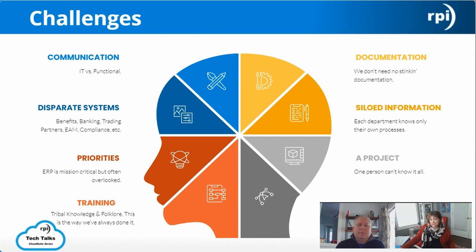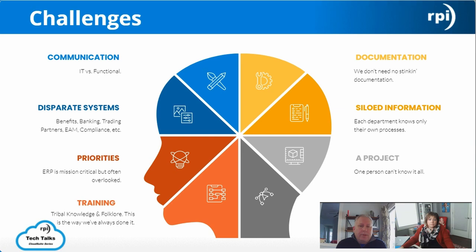What are some of the challenges we see? I think the number one challenge is communication. IT speaks one language and functional users speak another — neither one of those is wrong. There's a difference in how each group views WRICE items. An IT person is really thinking about the tools and methods in the background; the functional user is really thinking about the process. Bringing those folks together and facilitating a conversation between those two different groups can result in a lot of good information.